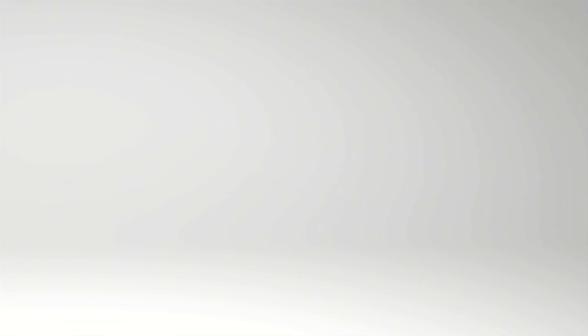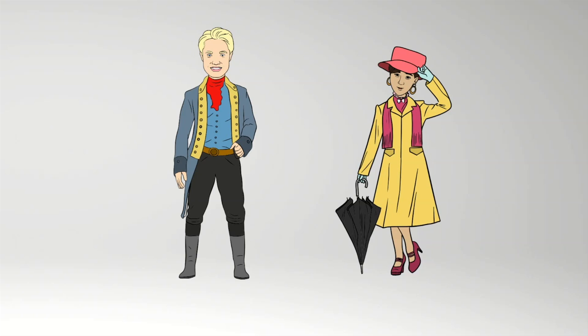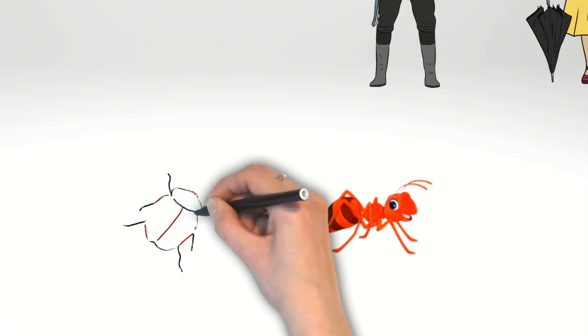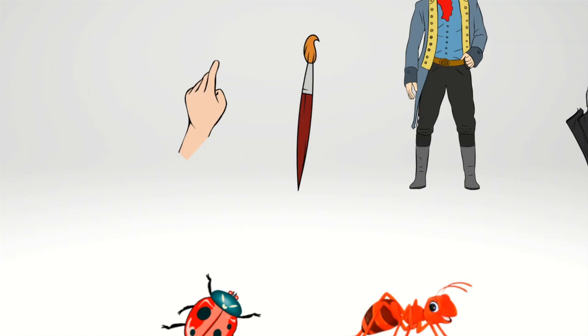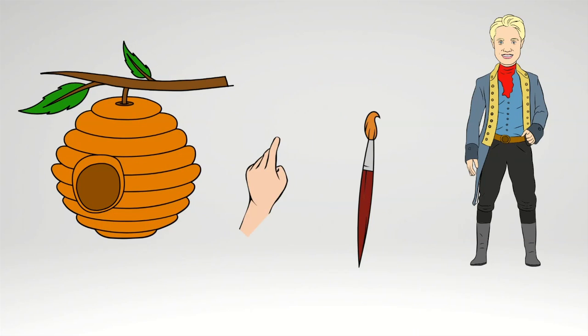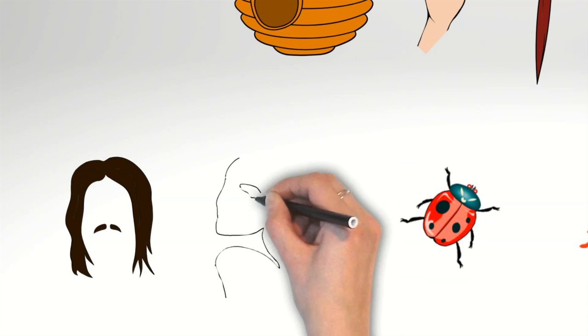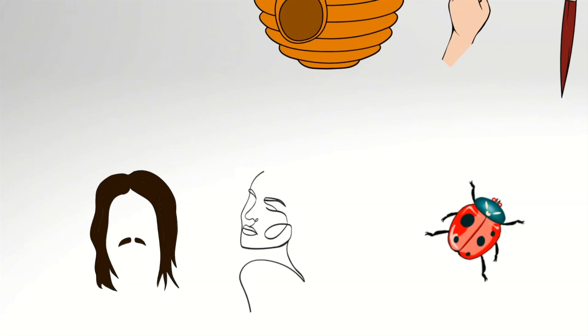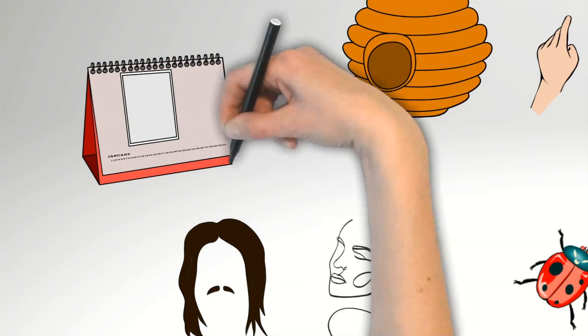Red lipstick became common among actors and performers in ancient Rome as it helped to make their expressions more visible to the audience. The ointment was made from crushed insects, which were a common source of red pigment in ancient times, and it was applied with a small brush or finger and often mixed with other ingredients, such as beeswax or animal fats, to create a smooth texture. Also in Rome, as well as in ancient Egypt, red lipstick was popular among men and women. The use of red lipstick continued to be popular in Rome and across Europe in the centuries that followed.